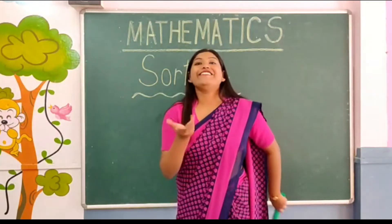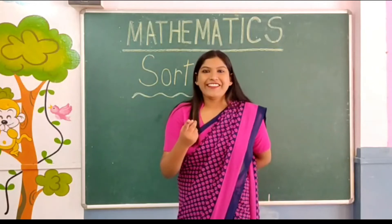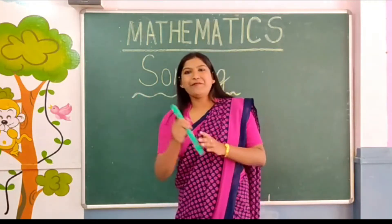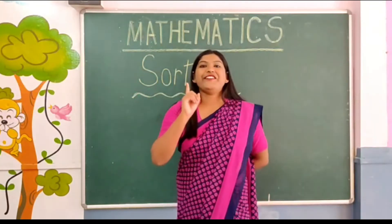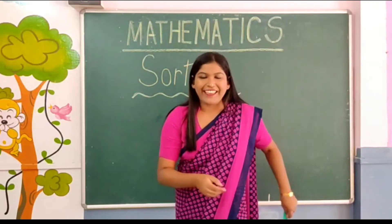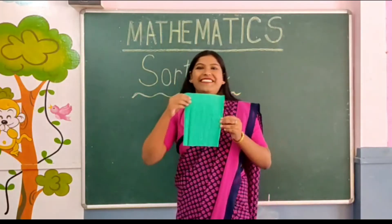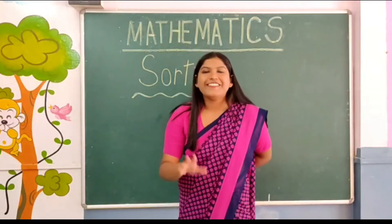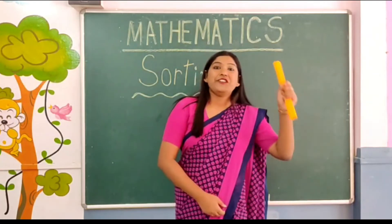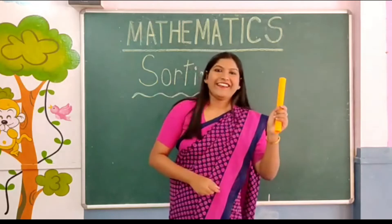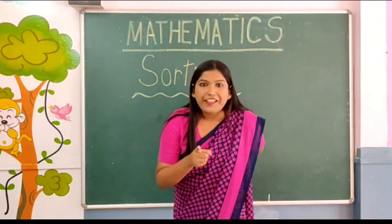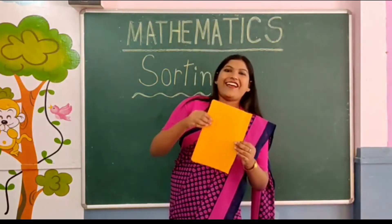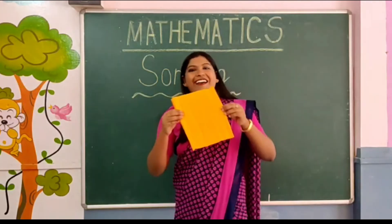There is Green. There is Green. Here I am. Here I am. Show me if you can. Show me if you can. Here I am. Here I am. There is Orange. There is Orange. Here I am. Here I am. Show me if you can. Show me if you can. Here I am. Here I am.